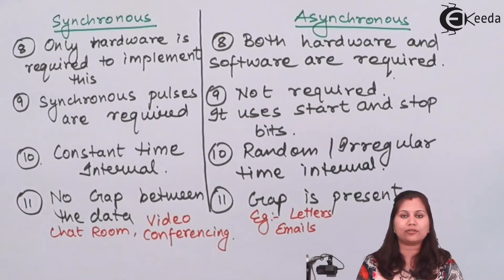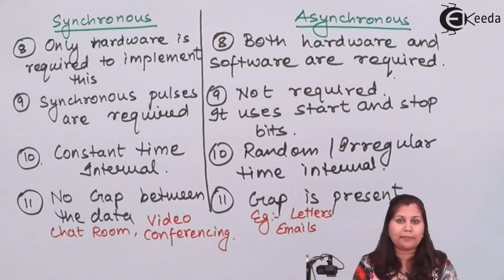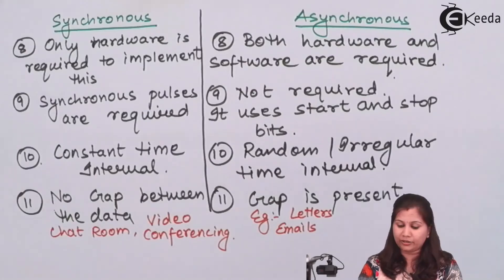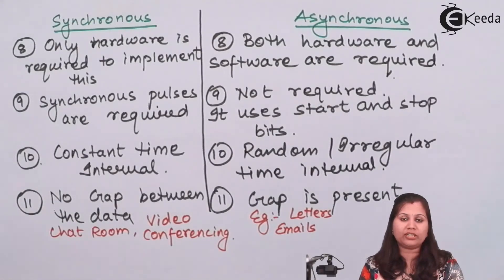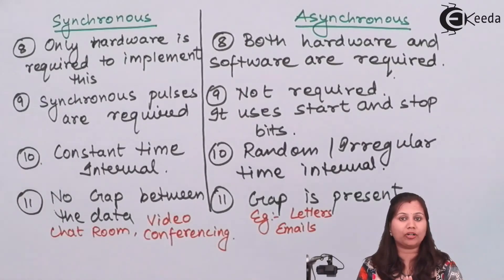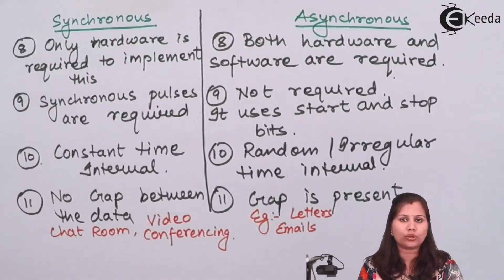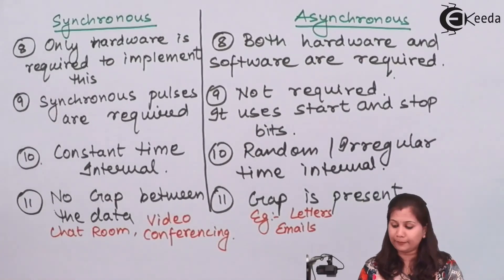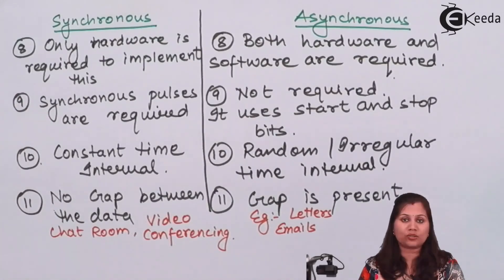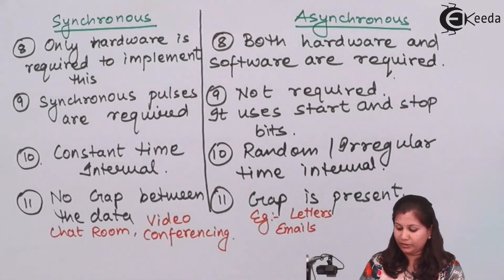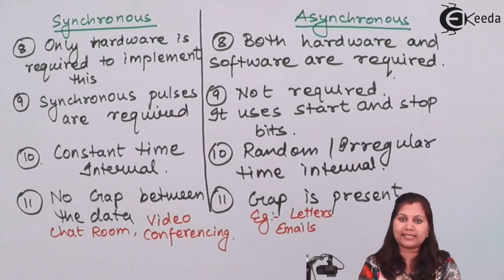So these are the examples of synchronous and asynchronous data transmission. We studied the differences between the two methods. The major difference is that in synchronous data transmission we have a clock pulse that is synchronized for both the receiver and the transmitter — both share one single clock. Whereas in asynchronous, no external clock is required; the transmitter and receiver use their internal clocks and no synchronization is needed — that is what is called the asynchronous method. I hope this topic is clear to you. Thank you.